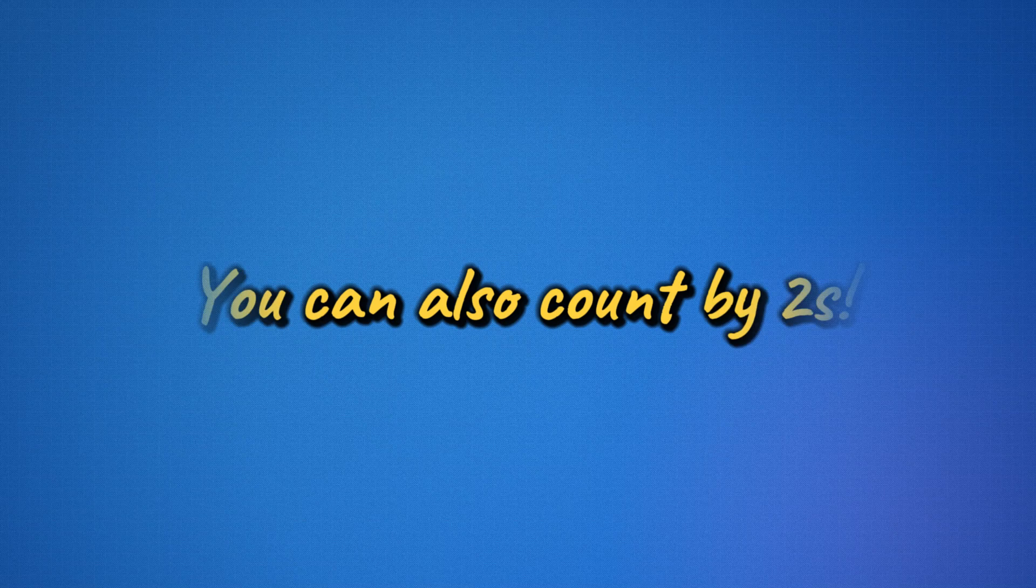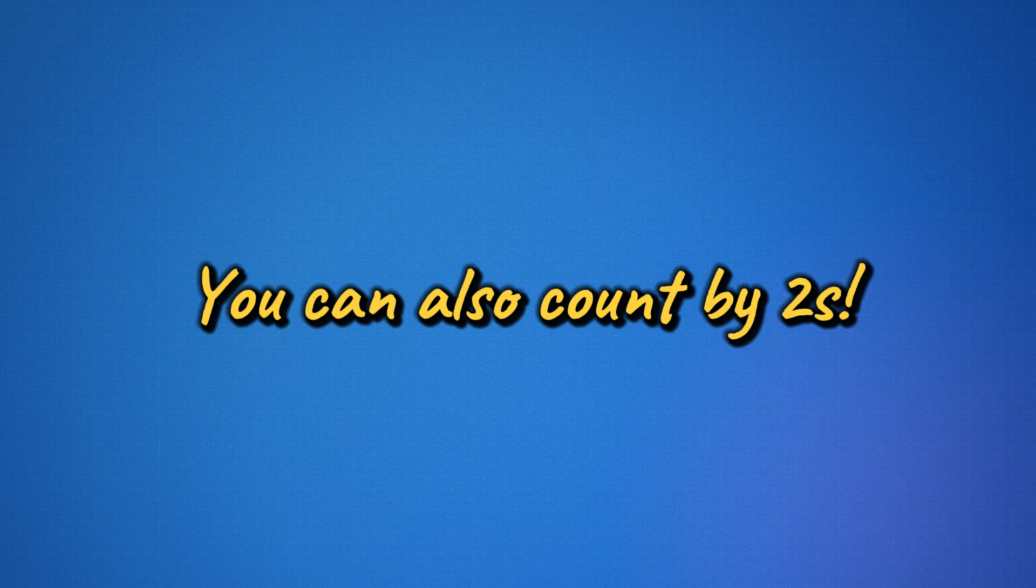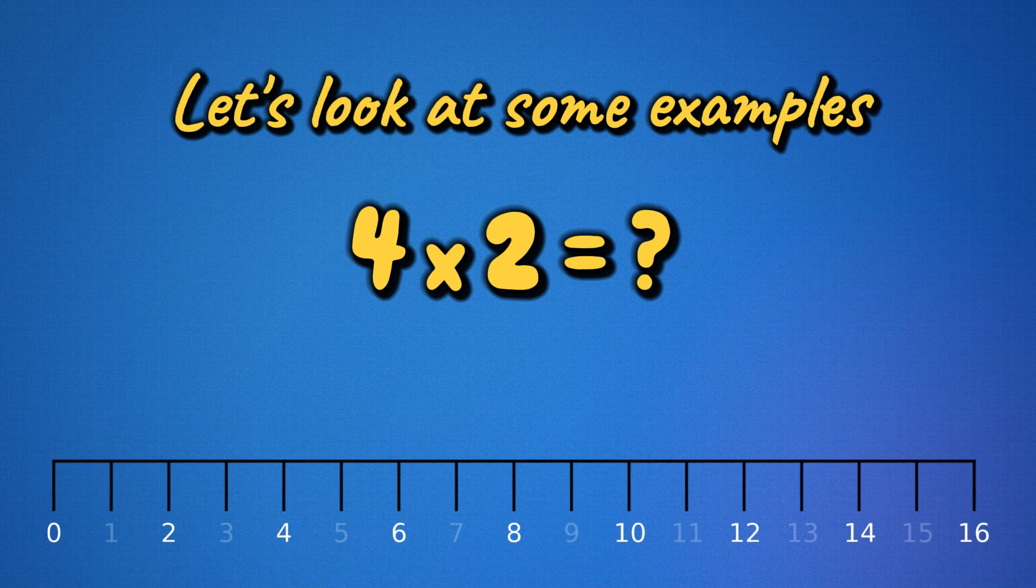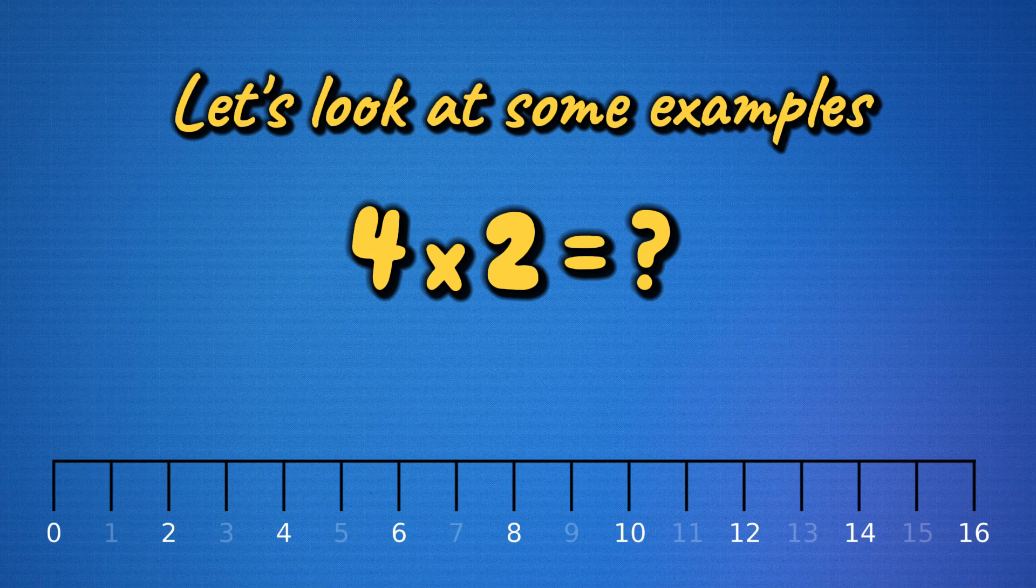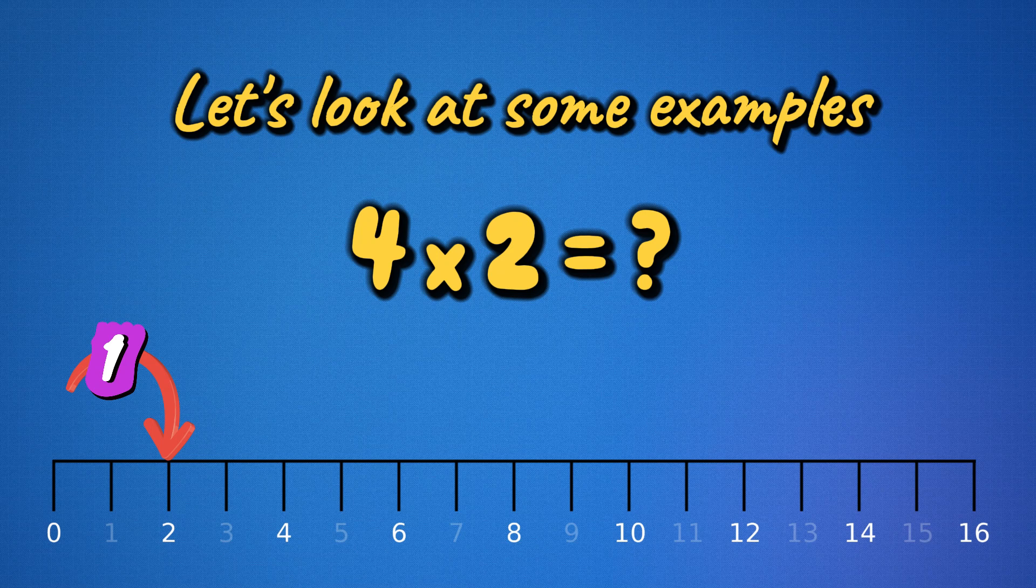Another way to figure out answers is by counting by twos. Let's say you want to solve four times two. Start at zero and count by two four times. Two, four, six, eight. So four times two equals eight.